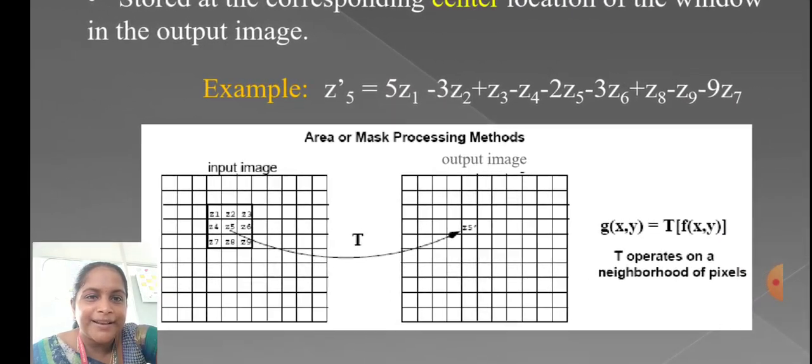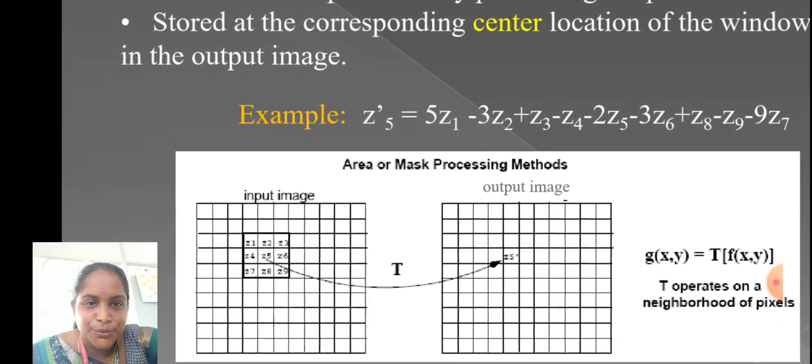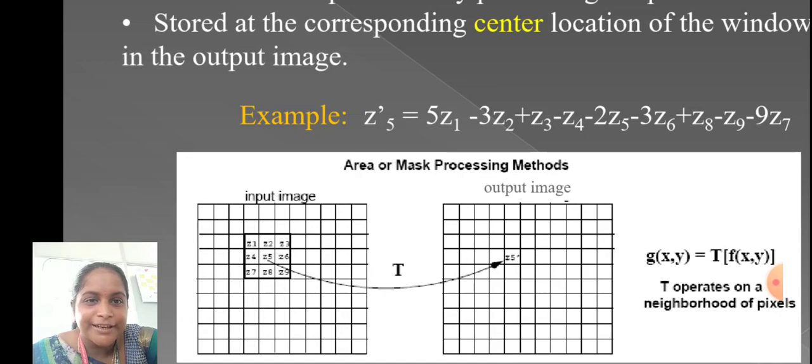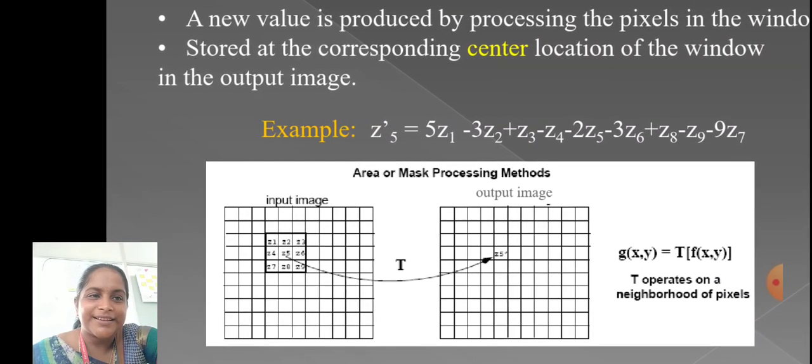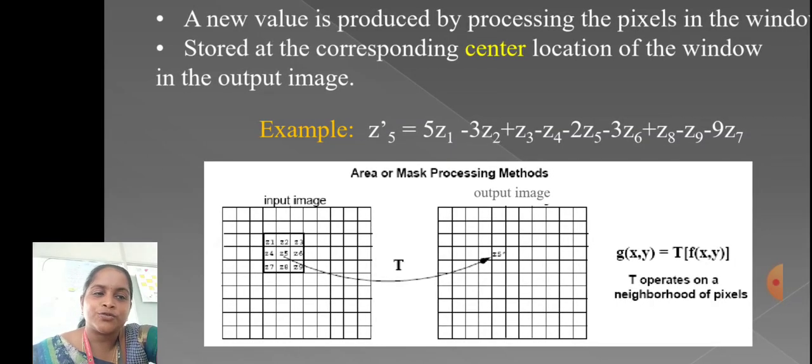In this example, in the center, it stores Z1, Z2, Z3, 4, 5, 6, 7, 8 and 9. Here also, we can take 3 cross 3 neighborhood of a pixel. And T operates on a neighborhood of pixels here.